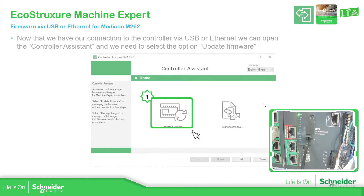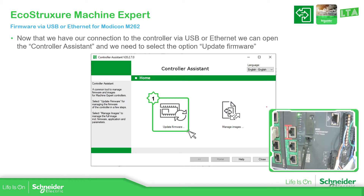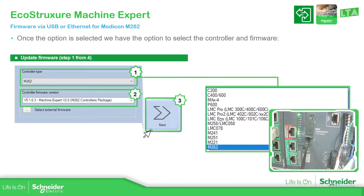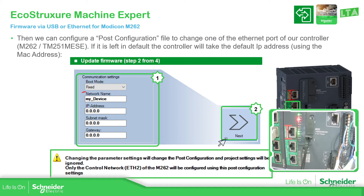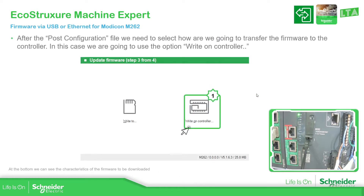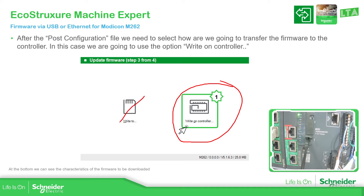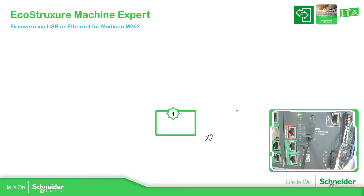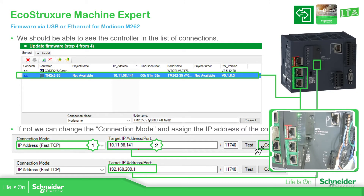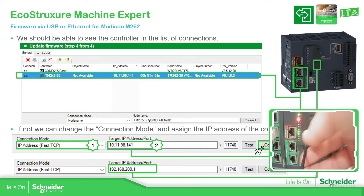Now that we know we have the possibility to connect, it's time to open the Controller Assistant to log in and change the firmware — select Update Firmware. We just need to select the controller we want to use, then we have the possibility to change the post configuration file for Ethernet port two. Select Next, then choose Write On Controller — not the SD card, because we're not going to use the SD card. Then check the communication as shown in the Machine Expert side.